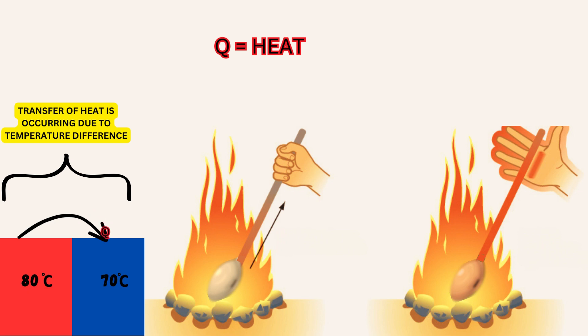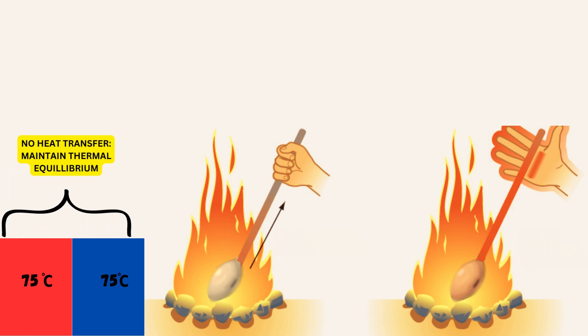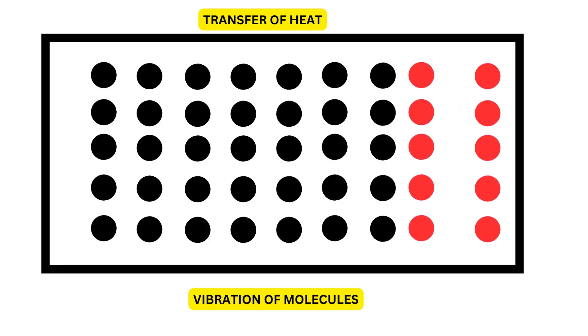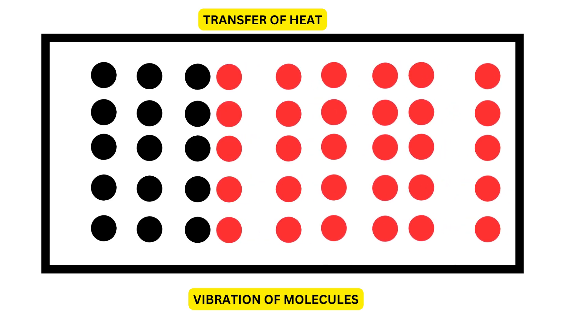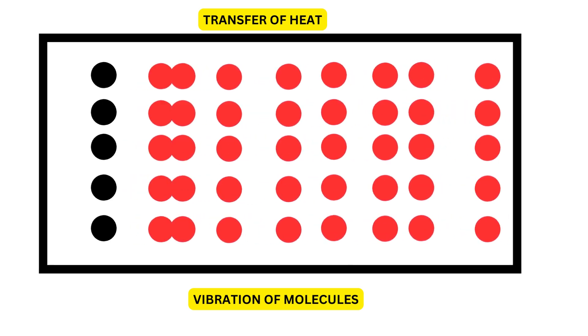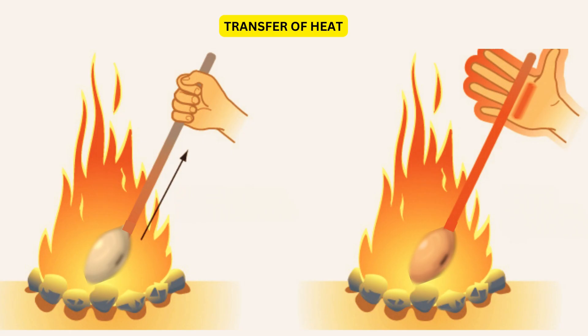Now, you must be wondering why this happened. Well, friends, this happens because metals are good conductors of heat. Heat energy is passed from one particle to the next, causing them to vibrate and transfer the energy along the spoon. In essence, we can say that conduction is all about transfer of heat through solids.